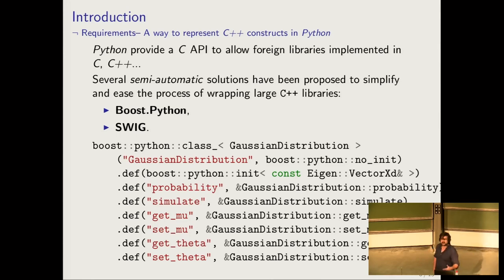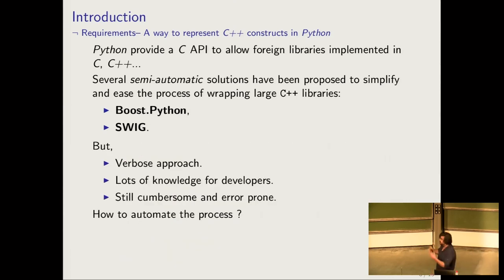There are several semi-automatic solutions like Boost.Python. Boost.Python is quite good, but it's still a verbose approach. You have almost the same number of lines that you wrote in the header that means the same thing. And you could have errors you need to translate your documentation. It's not really useful for large libraries. And so how can I automate the process for her?